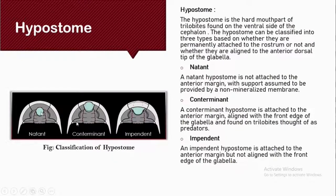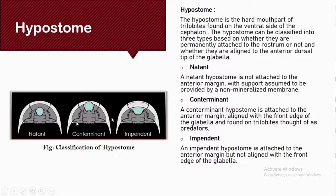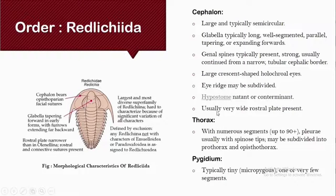The natant hypostome is not connected to the anterior margin — it is assumed to be connected to the body by soft tissue membrane, which is not preserved in the fossil record. In the conterminant hypostome, they are connected with the anterior margin and aligned with the glabella. In the impendent type, they are connected with the anterior margin but are not aligned with the glabella.